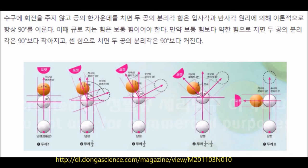수구에 회전을 주지 않고 공의 한가운데를 치면 두 공의 분리각 합은 입사각과 반사각 원리에 의해 이론적으로 항상 90도를 이룹니다. 이때 큐로 치는 힘은 보통 힘이어야 합니다. 보통 힘보다 약한 힘으로 치면 분리각은 90도보다 작아지고, 센 힘으로 치면 90도보다 커집니다.